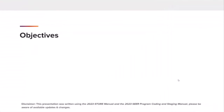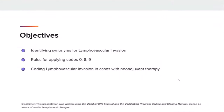What is Lymphovascular Invasion? Lymphovascular Invasion is the presence of tumor cells in lymphatic channels and/or blood vessels within the primary tumor, noted microscopically by the pathologist. In some cases, the presence or absence of lymphovascular invasion is used as an indicator of prognosis.